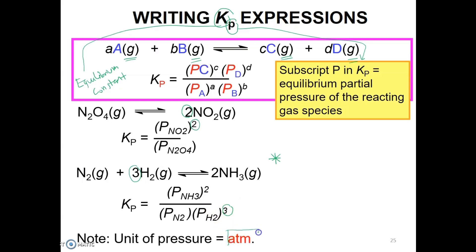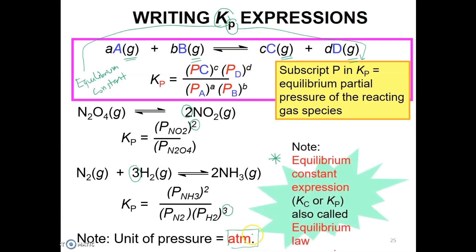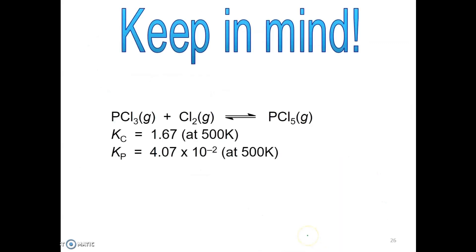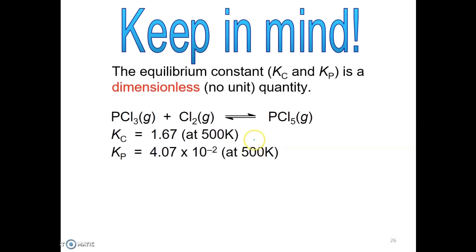Highlight this because it is important: the unit of pressure for each gas species must be in ATM. Also highlight: the equilibrium constant expressions Kc and Kp are called the equilibrium law. Bear in mind that the Kc and Kp values are dimensionless — they have no units. For example, a Kc value of 1.67 (no unit) at 500 K, or a Kc value of 4.07 × 10⁹² at 500 K — both have no units.